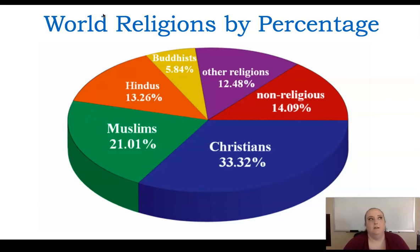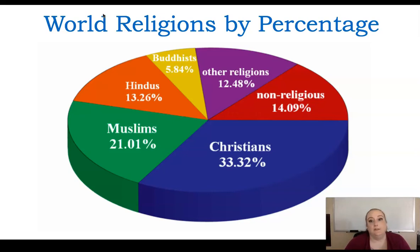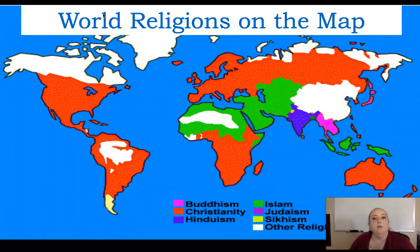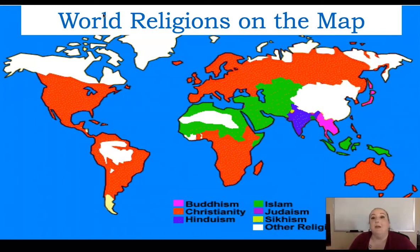This slide gives a general idea of world religions by percentage. Christians take up a lot — that includes Catholics, though many Christian sects see themselves as very different from Catholics. Muslims are really gaining — it's a huge growing religion, so this data is a little old. On the map you can see where the bulk of major religions are concentrated. Religion is very different and very personal to people, but it will come up in this class.